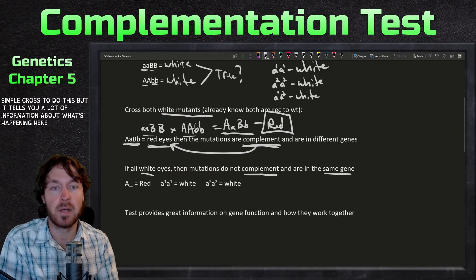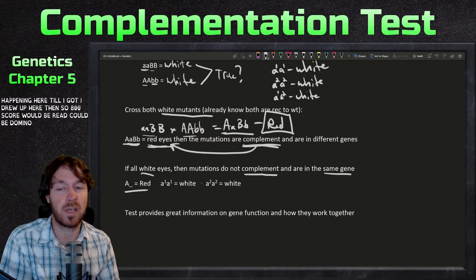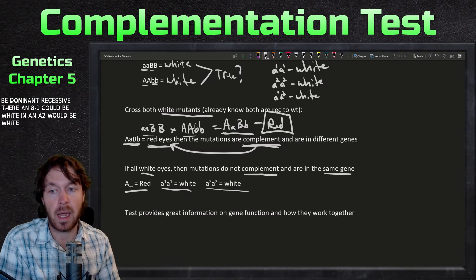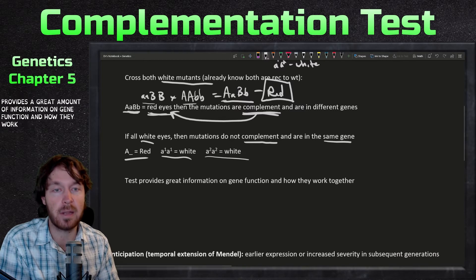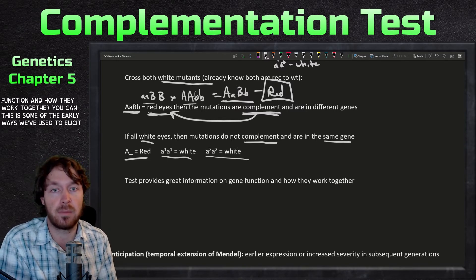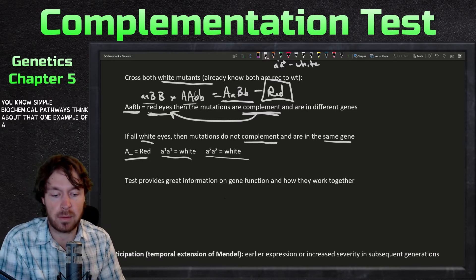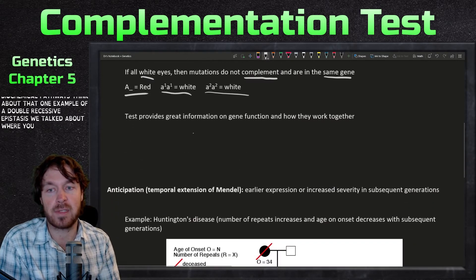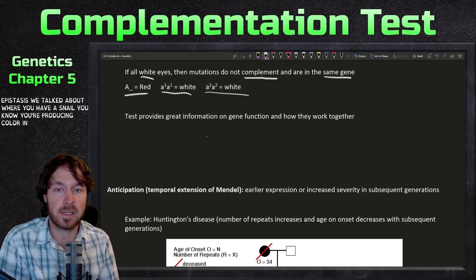As drawn, A-underscore would be red — could be dominant or heterozygous — and then a1 or a2 would both be white. This test provides a great amount of information on gene function and how genes work together. It's one of the early ways used to elucidate simple biochemical pathways, like that double recessive epistasis example with snail coloration.